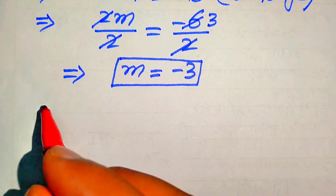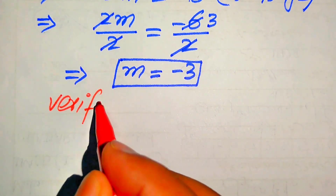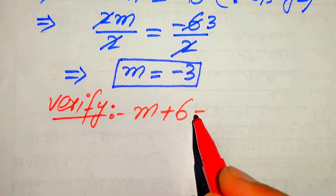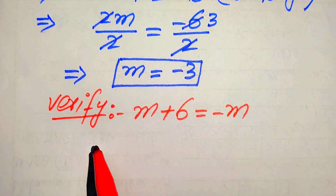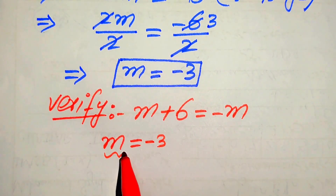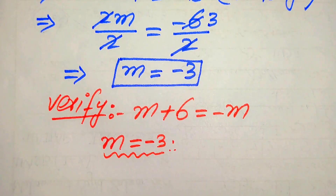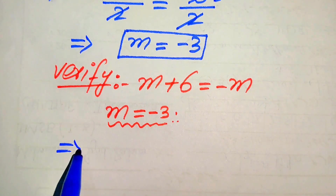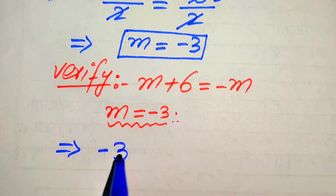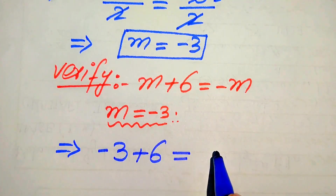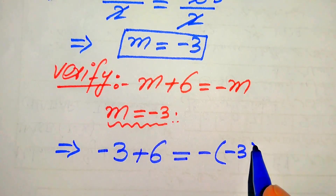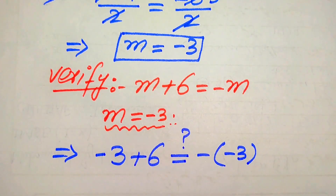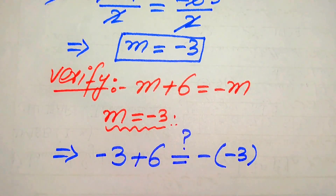For verification, we first copy down the given equation: m plus 6 equals minus m. We verify the value m equals minus 3 by putting this value on both sides of the equation. When we substitute, the left hand side becomes minus 3 plus 6, and the right hand side becomes minus of minus 3.